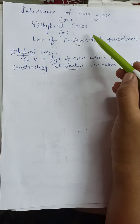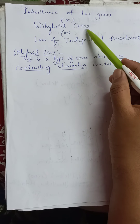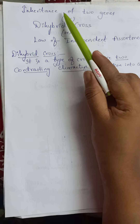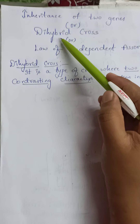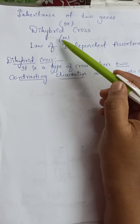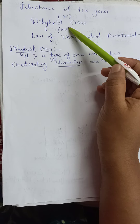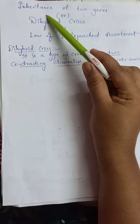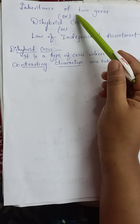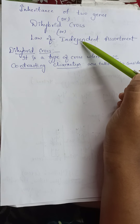Good morning everyone. In this video we are going to study about the second concept next to monohybrid cross, that is dihybrid cross, also called inheritance of two genes or law of independent assortment. When it comes to monohybrid cross, we wrote inheritance of one gene and law of purity of gametes or law of segregation.